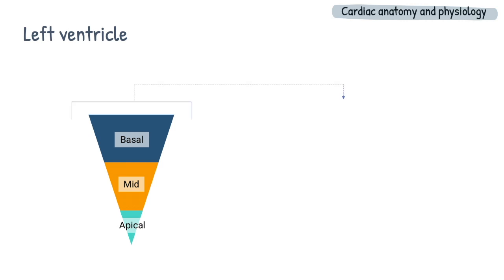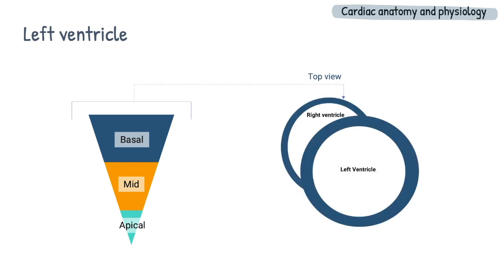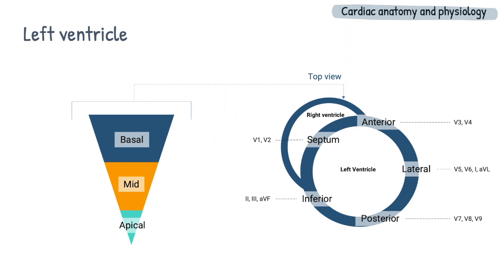Within each segment, the walls are further divided into septum, anterior, lateral, posterior, and inferior wall, going clockwise from the septum. The region is also denoted by different ECG leads on a 12-lead ECG.